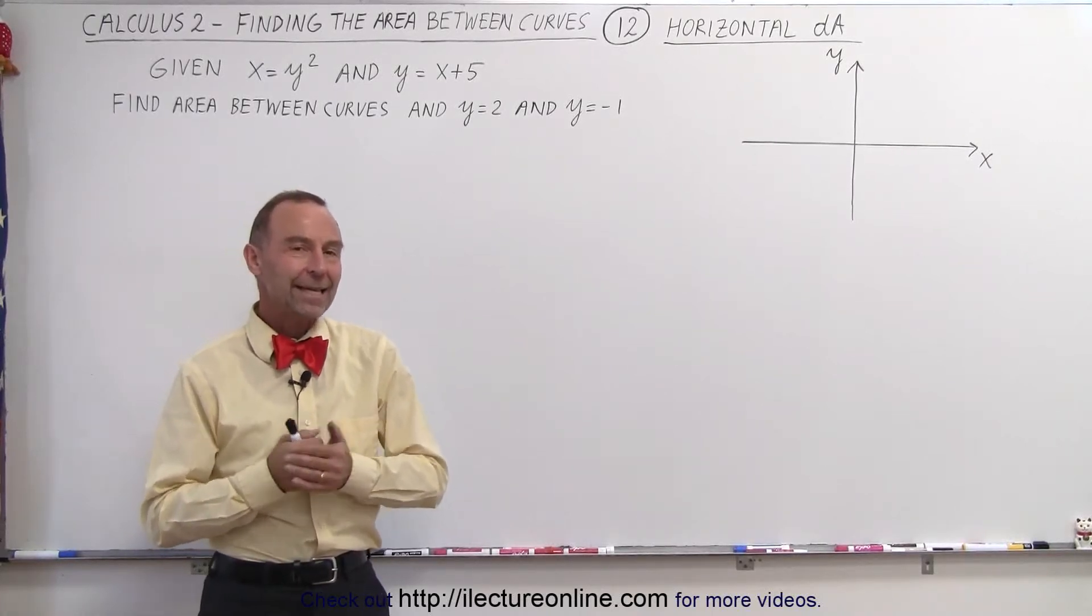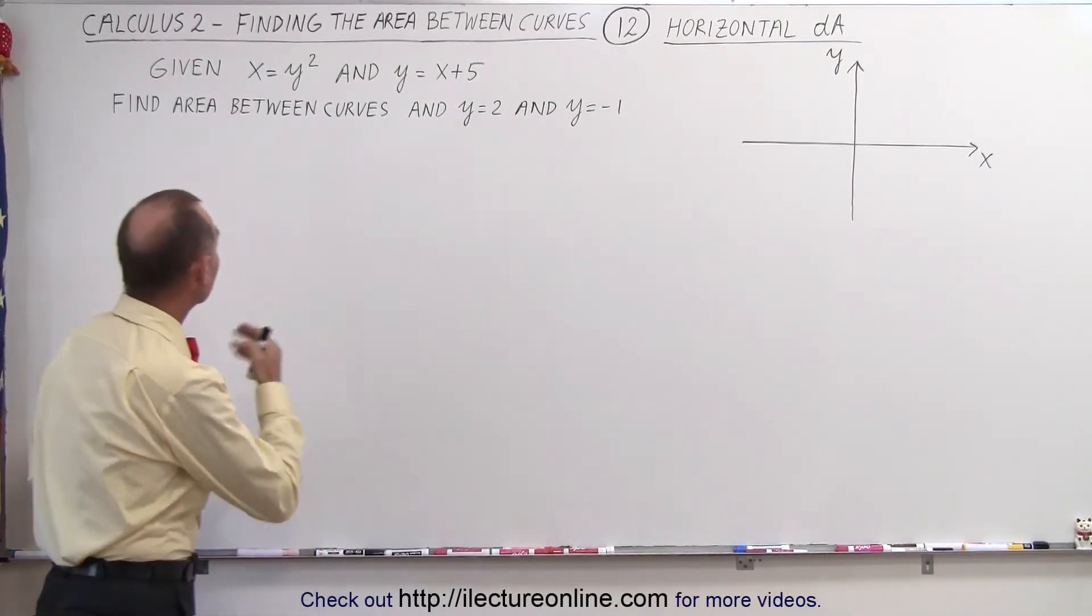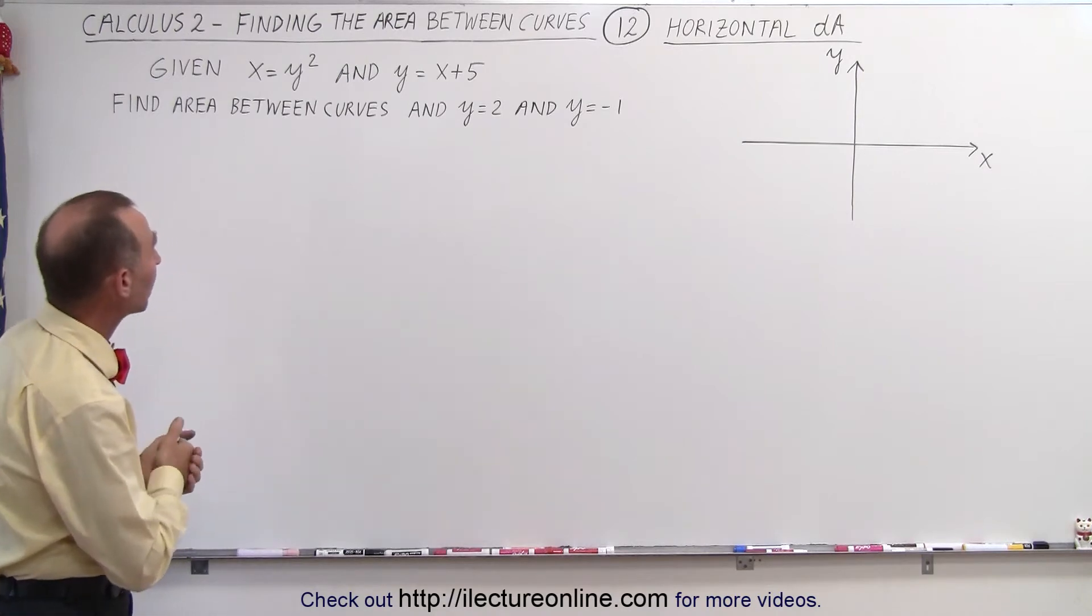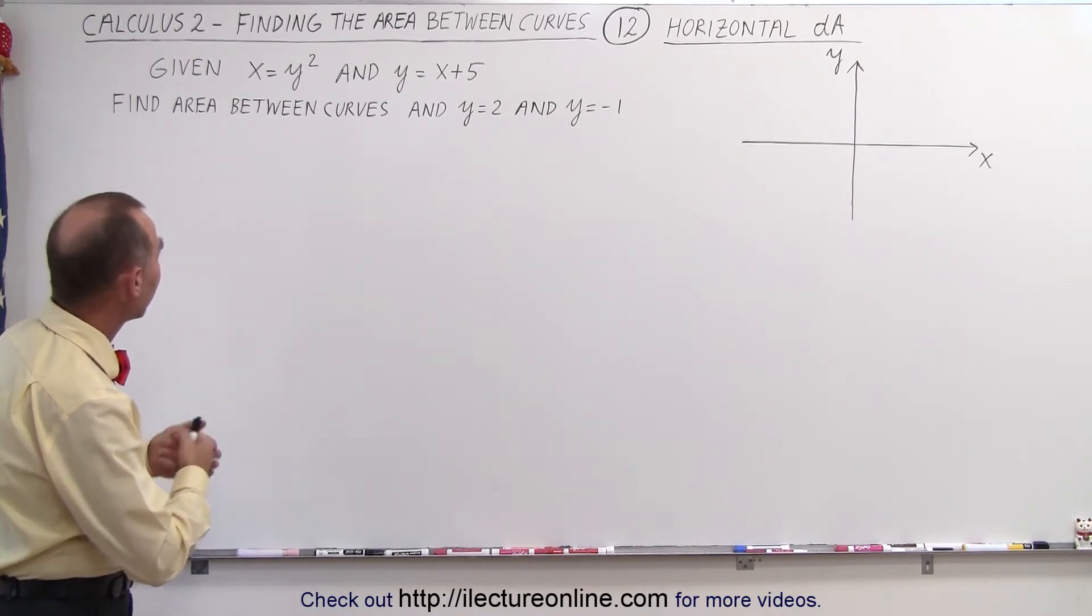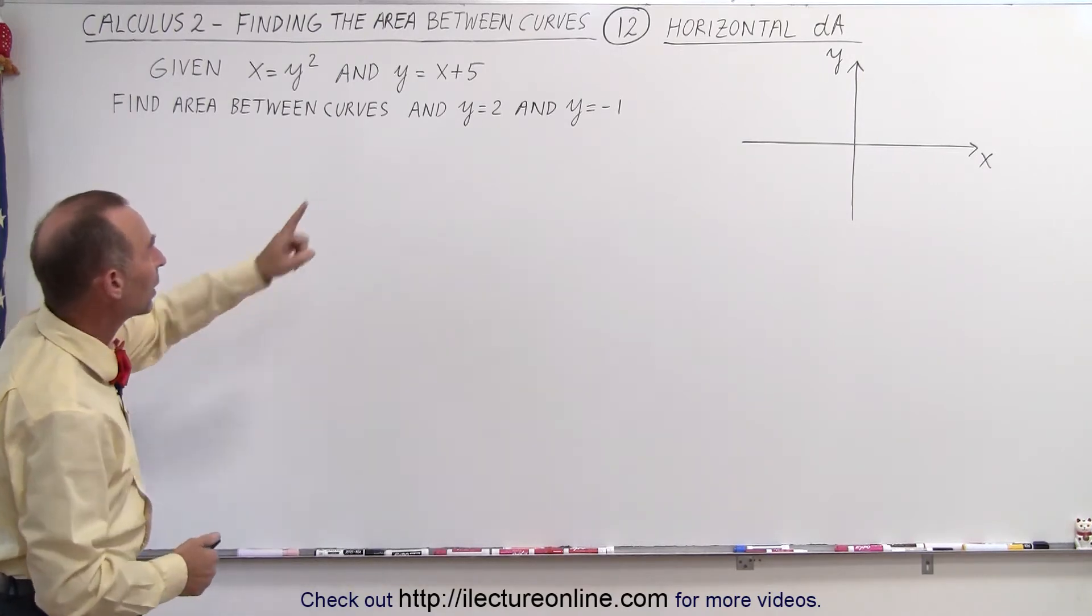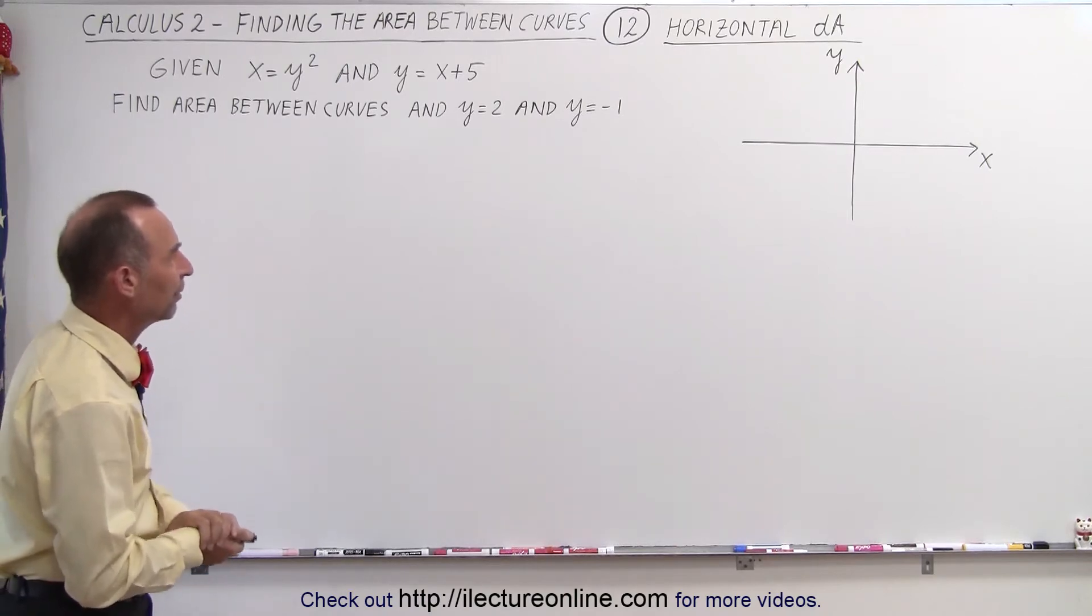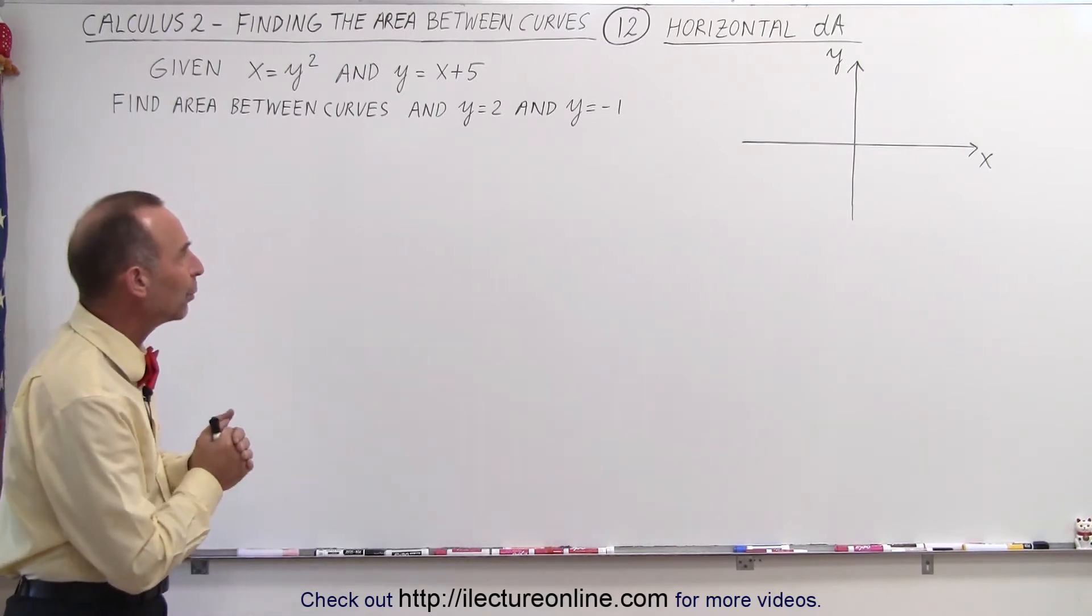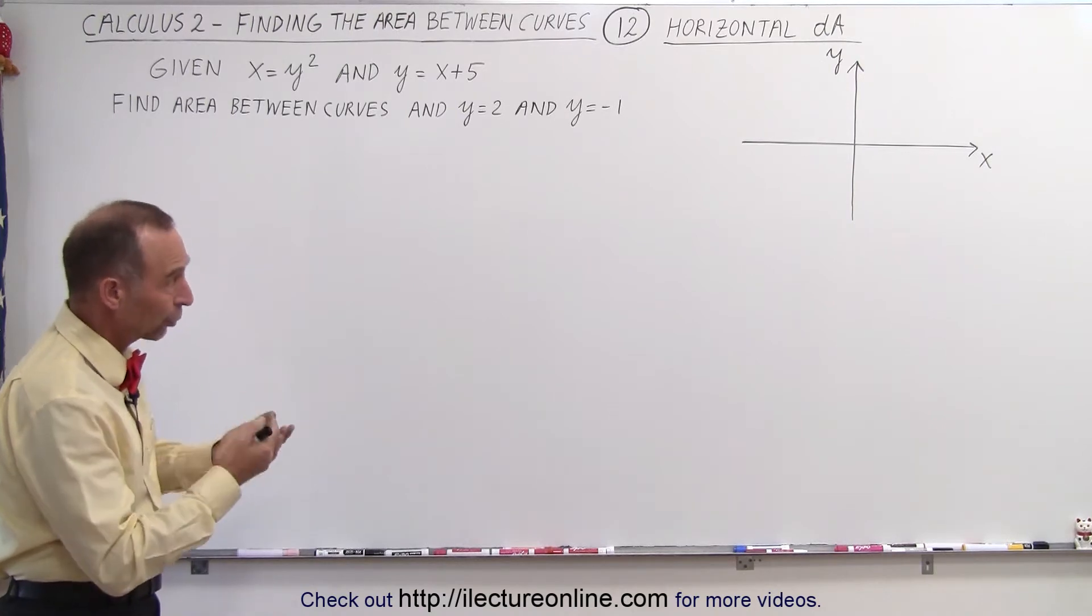Welcome to ElectronLine. Here we are given two curves defined by x equals y squared and y equals x plus 5, and two lines defined by y equals 2 and y equals negative 1. We're supposed to find the area contained within all those lines and curves.